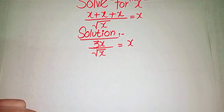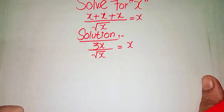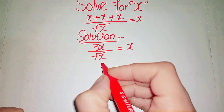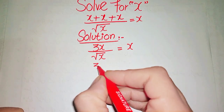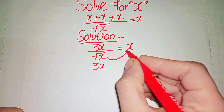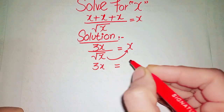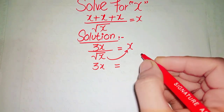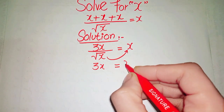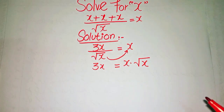Now we have to find the value of x. When we take the square root of x to the right side, it multiplies with x, and our equation becomes 3x equals x times square root of x.